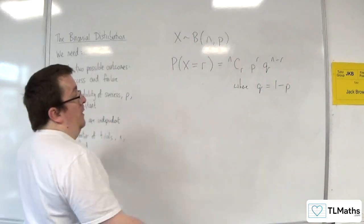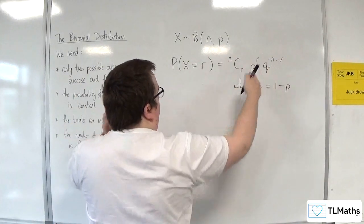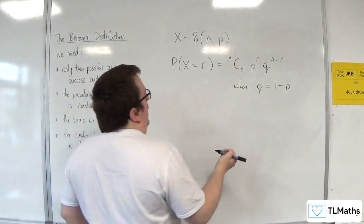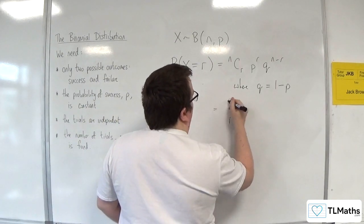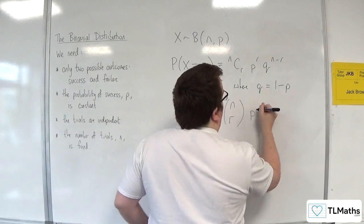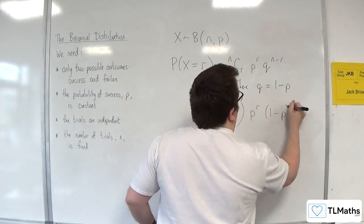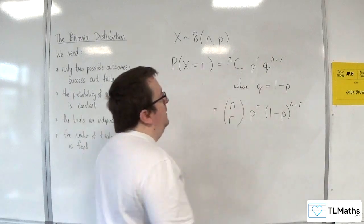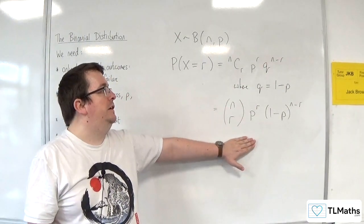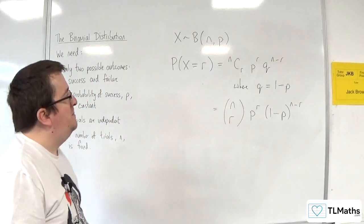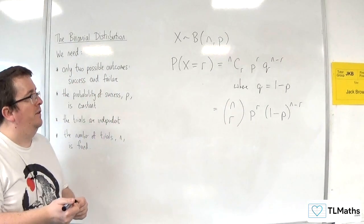So nCr P to the R times Q to the N minus R. Alternatively, I would usually write that down as N choose R like that, and then P to the R and then 1 minus P to the N minus R. Both of these are equivalent. They're both fine to use, so it doesn't matter which notation you decide on using.